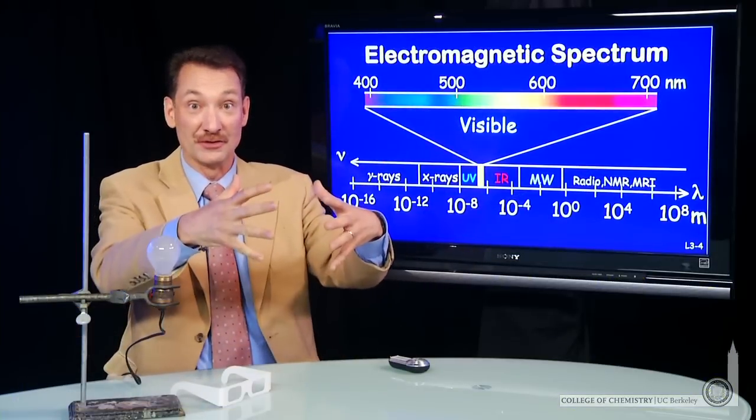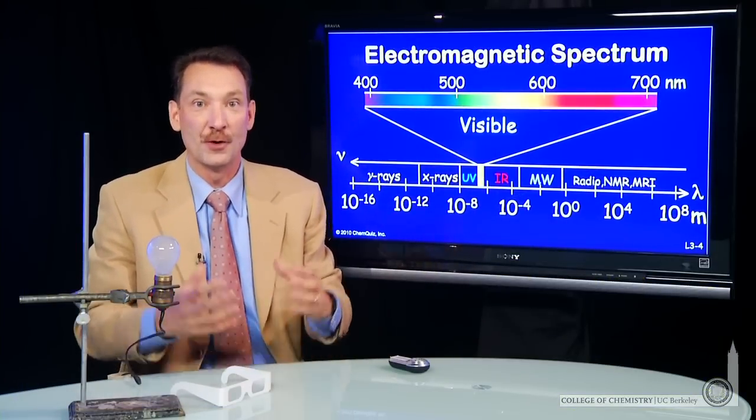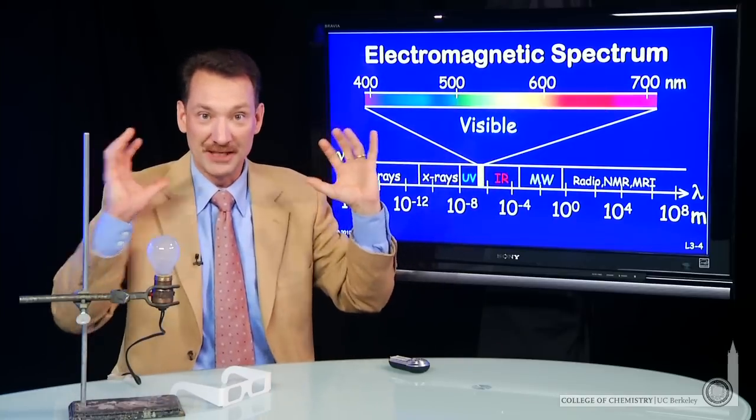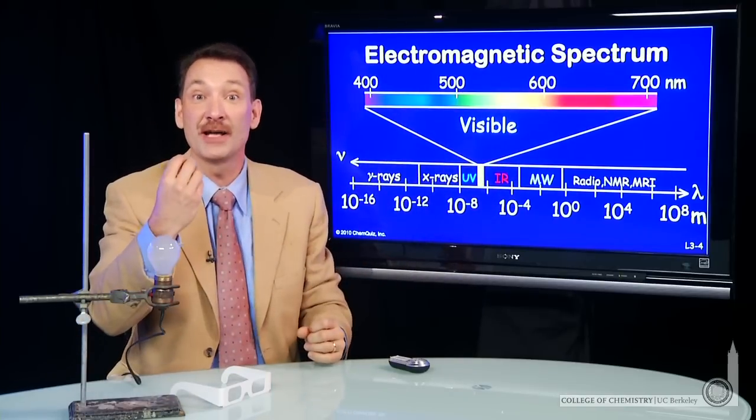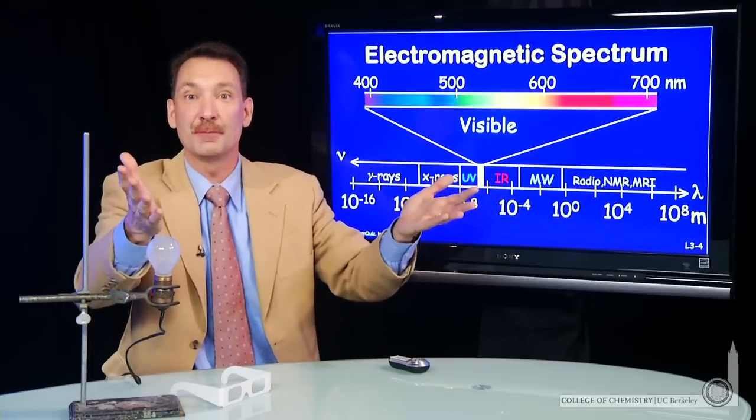The combination of all those colors, all together, would give us white light. So from blue to red, completely all at once, you would perceive white light. But you can take white light and break it back down into its component colors.